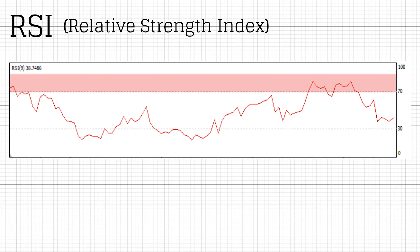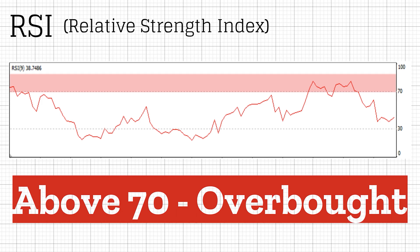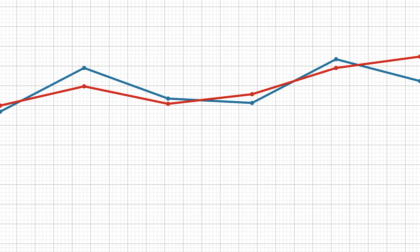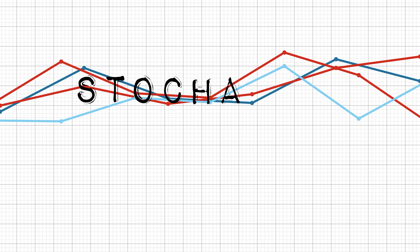Once the RSI is over 70, it's considered overbought, while below 30 is oversold. Its line crosses below the overbought line or above the oversold one, signaling to buy or sell. RSIs are more suitable in trading ranges than trending markets.